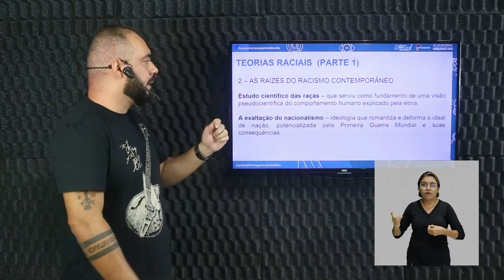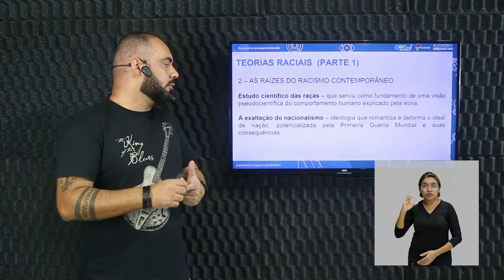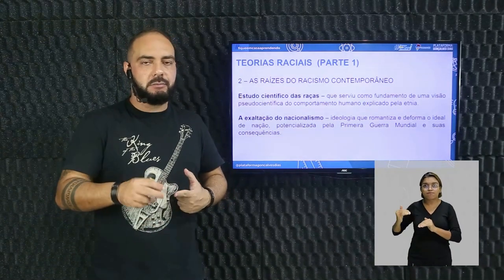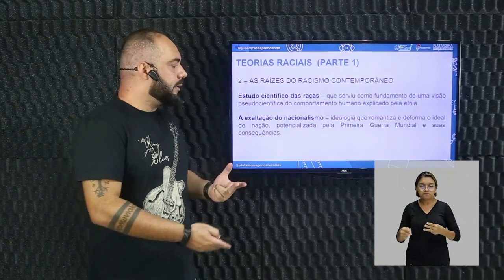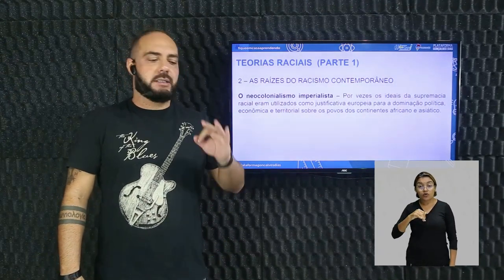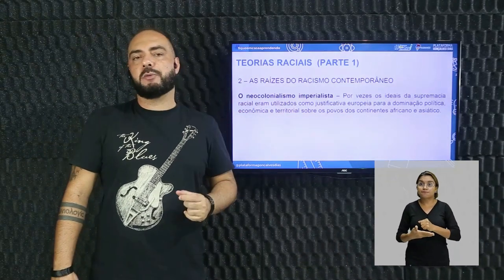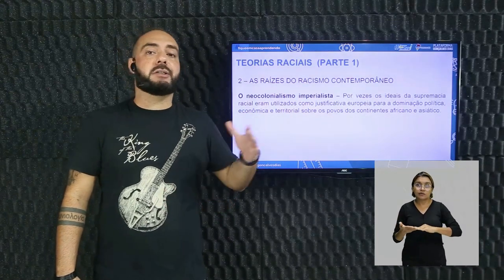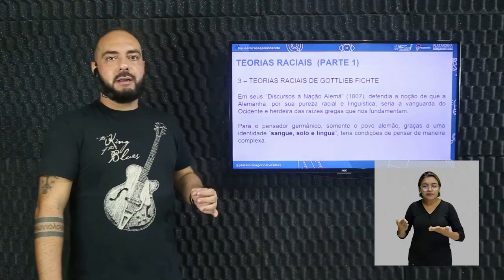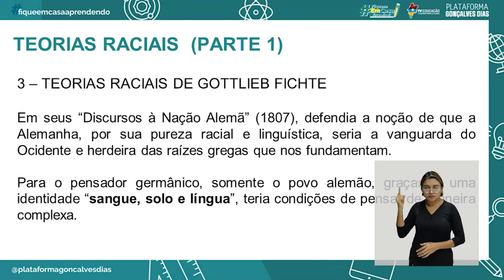As três raízes do racismo contemporâneo são: primeiro, o estudo científico das raças; segundo, a exaltação do nacionalismo ou ultranacionalismo; e terceiro, o neocolonialismo imperialista. Por vezes os ideais da supremacia racial eram utilizados como justificativa europeia para a dominação política, econômica e territorial sobre os povos dos continentes africano e asiático.